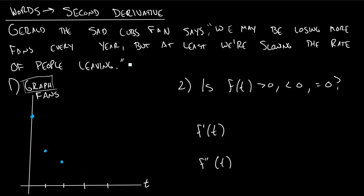And then the year after that, Gerald says they're still losing more fans and they're still slowing down the rate. So now when we're trying to figure out what this point would be over here, it's just not going to be as big as a difference as it was here. So maybe it's like right there, then maybe here, maybe they just lose a couple fans. So the Cubs are starting to turn it around.